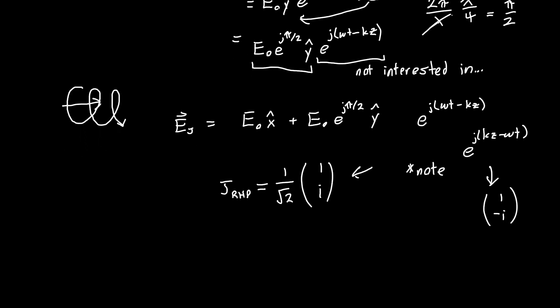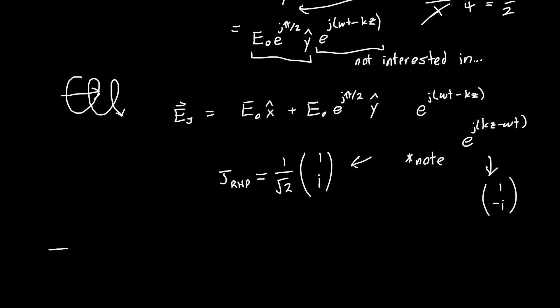So if instead we had shifted the wave, instead of shifting the y wave, the y polarized wave in this direction, we could have also shifted it in this direction. And that would have given us left hand polarized light, which the Jones vector, we could just represent as 1 minus i. And so these are two circularly polarized forms of light. And they correspond to helixes or helices that are either right or left handed and are propagating along the z direction.